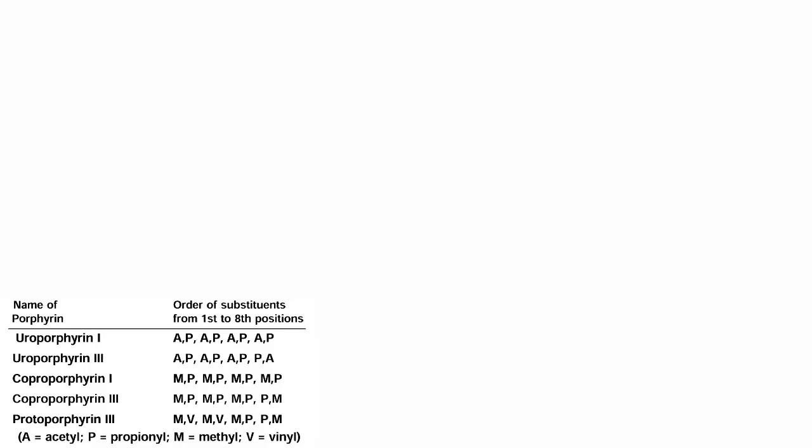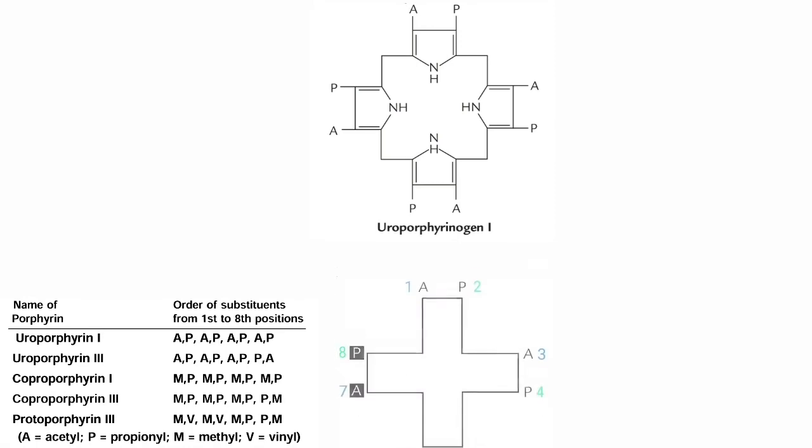When the substituent groups have a symmetrical arrangement 1, 3, 5, 7 and 2, 4, 6, 8, they are called as the series 1.